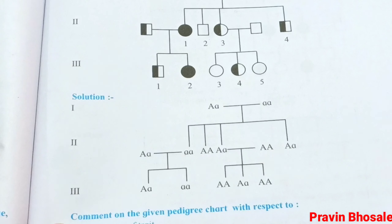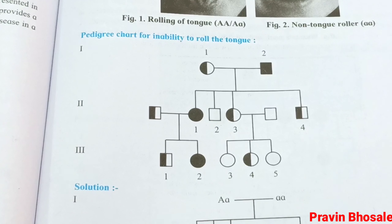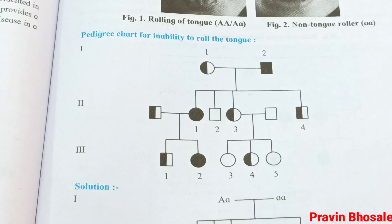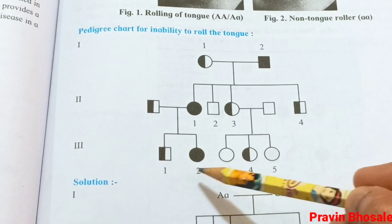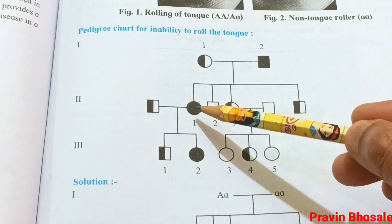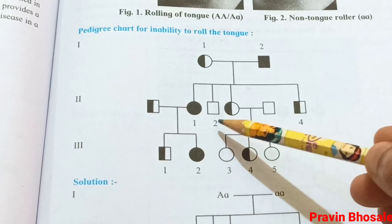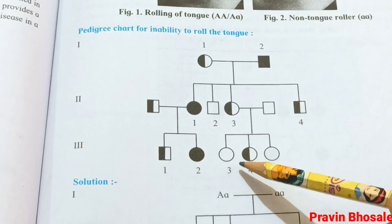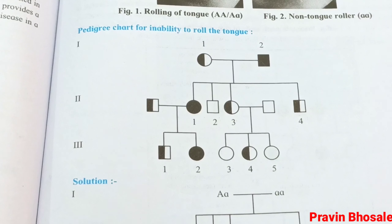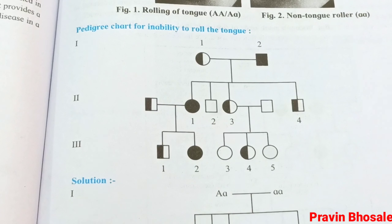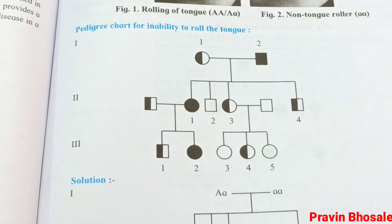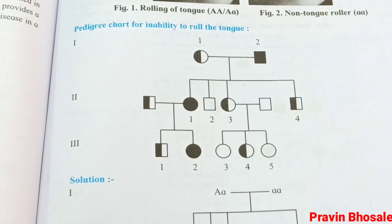Here the genotypes are given. This is an autosomal recessive trait — if the person is not able to roll the tongue, it is an autosomal recessive trait. There are nine progenies in total; two are affected and the remaining seven are normal. The linkage type is autosomal. In humans we have 46 chromosomes — 44 chromosomes (22 pairs) are autosomal and one pair is the sex chromosome.